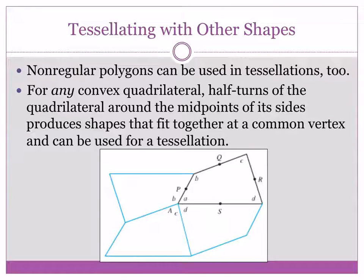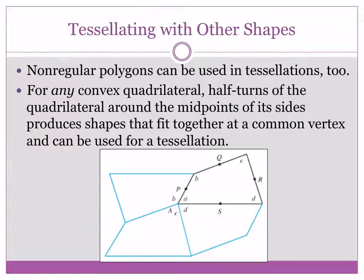If you're tessellating with non-regular polygons — this black shape here is a non-regular quadrilateral — you can cut each side length in half, finding the midpoint, and do a half turn rotation around that midpoint, repeating it again and again, and it will tessellate. Taking midpoint P between A and E and rotating a half turn brings the shape over. You can do this with all sides and with other non-regular polygons by using the midpoint of side lengths to perform the rotation for tessellation.